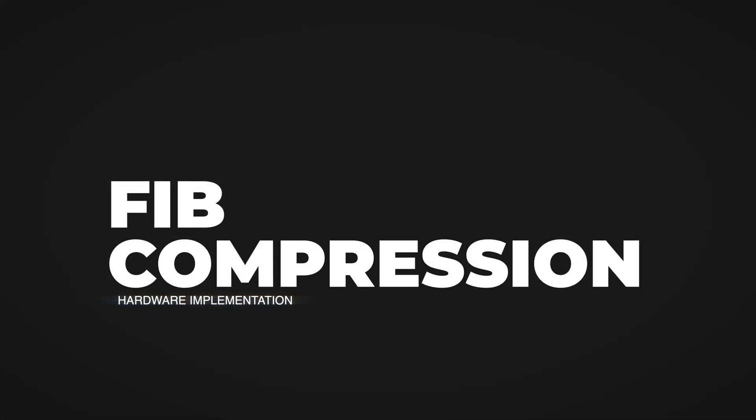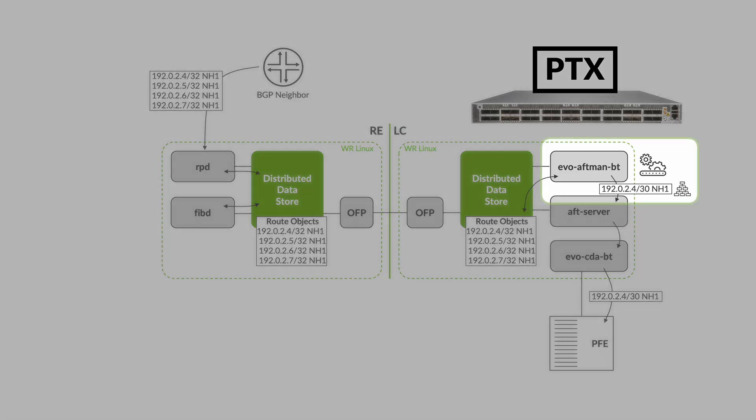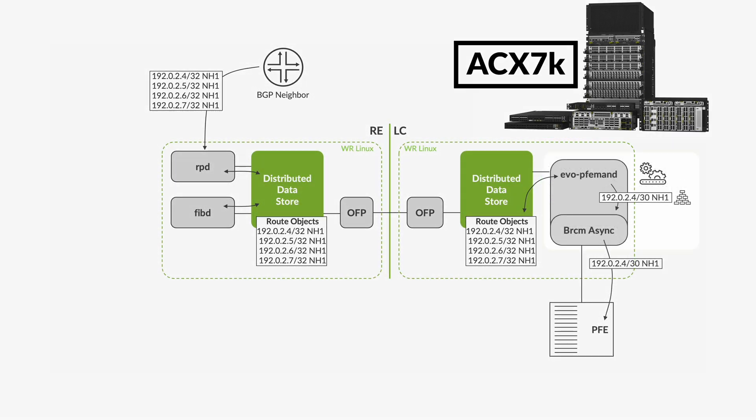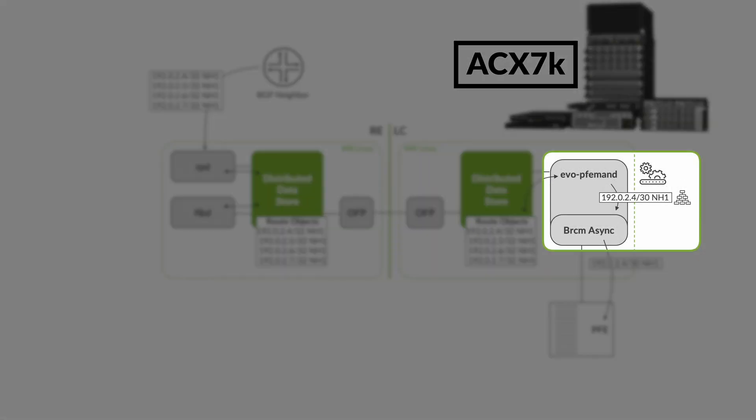In terms of hardware implementation, the compression is done inside the process just before pushing the routes into the PFE. In the PTX case, it will be in Evo Aftman BT, and in the ACX it will be in Evo PFE Mandi. The compression is not affecting the REAP and is not even involving FIB-D, so it has no impact on operations between protocols like redistribution.